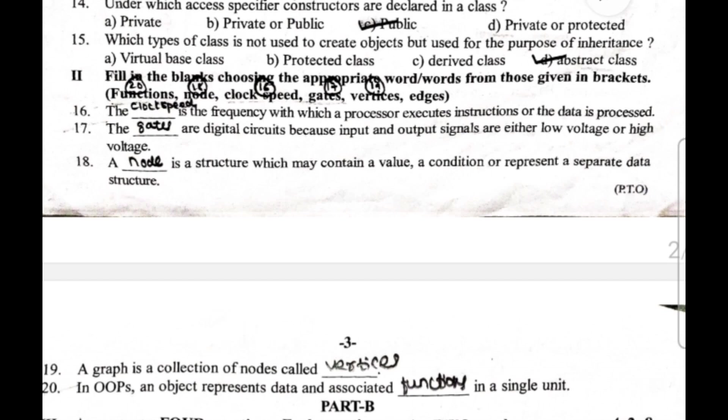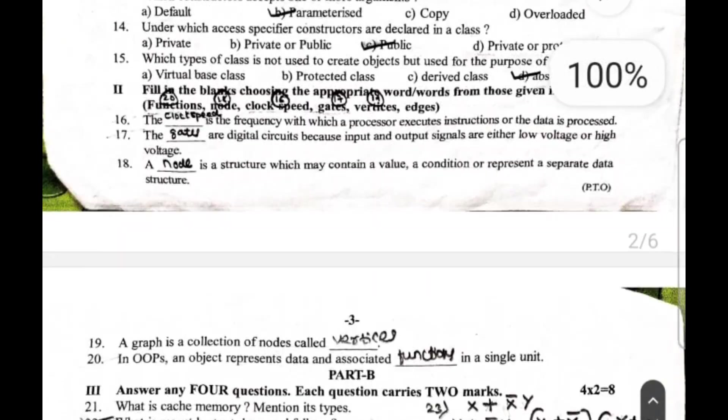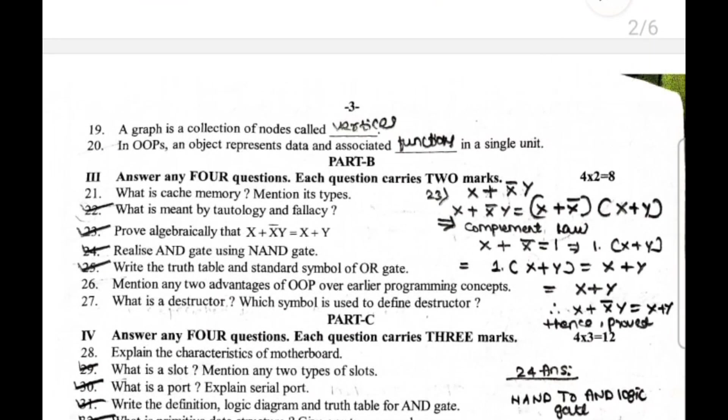Fill in the blanks choosing the appropriate answers. 16th answer is clock speed. 17th answer is gates. 18th answer is node. 19th answer is vertices. And 20th answer is functions.